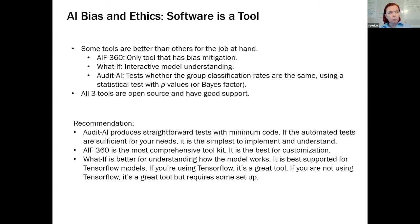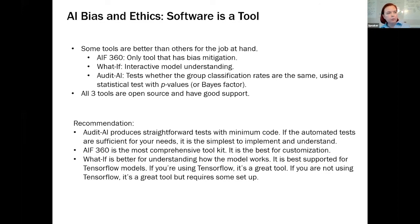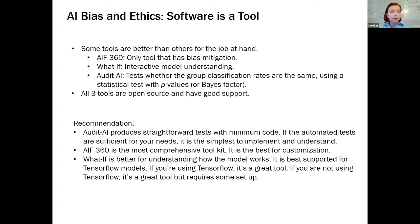Software is a tool — no more useful than a hammer if you don't have wood or nails or don't know how to swing it. My basic recommendations: you're going to look at three tools today. Audit AI gives you straightforward tests with minimum code. AIF360 is a comprehensive toolkit meant to be stood up in a production setting for automatically auditing and de-biasing many models. The What-If Tool from Google is an interactive tool with wonderful features — you can use it with any model, though it's easiest with TensorFlow and not meant for automated production testing.